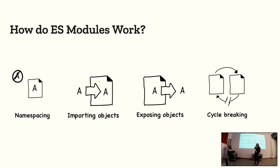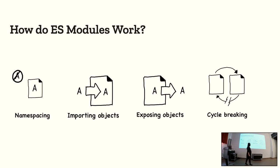So, how do ES modules work? Four items selected from the properties of modules: namespacing, importing objects, exposing objects, and cycle breaking. What's the fundamental problem that modules were meant to solve? Before we introduced modules, the way you got information into a global space that multiple scripts could access was via script tags, assigning something to the global — in the browser, the window object.